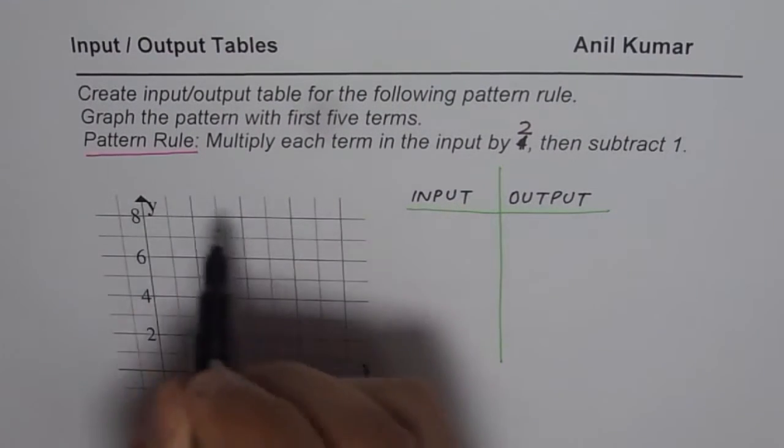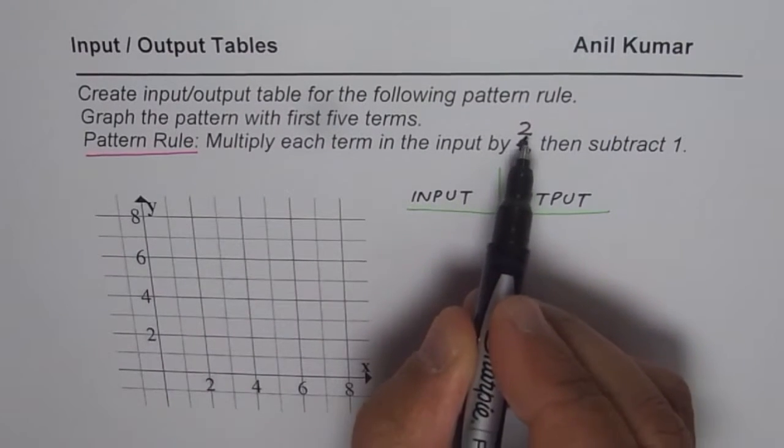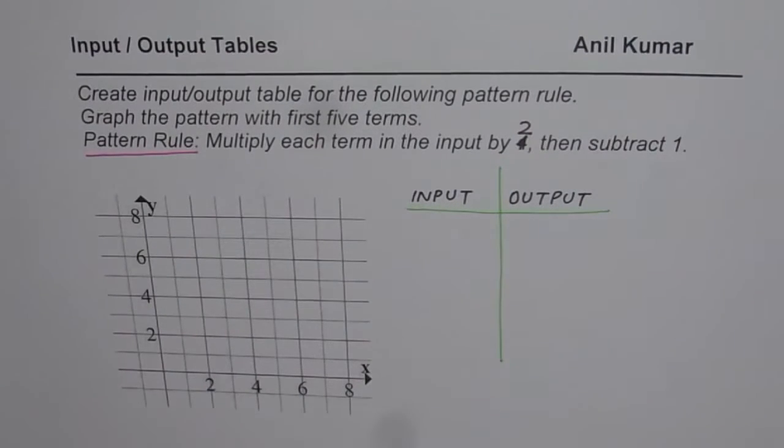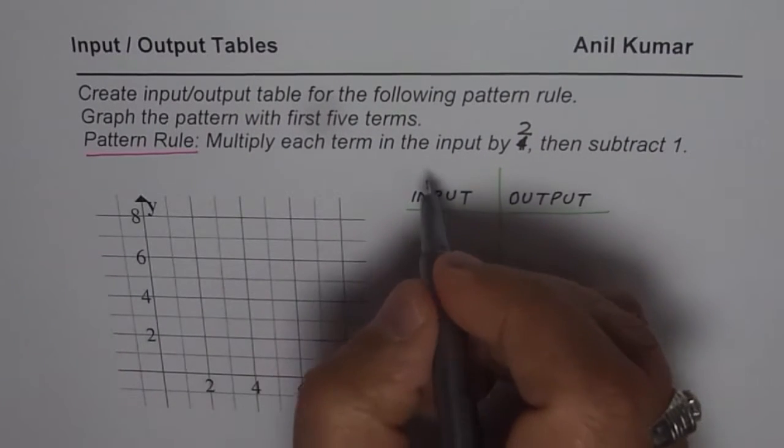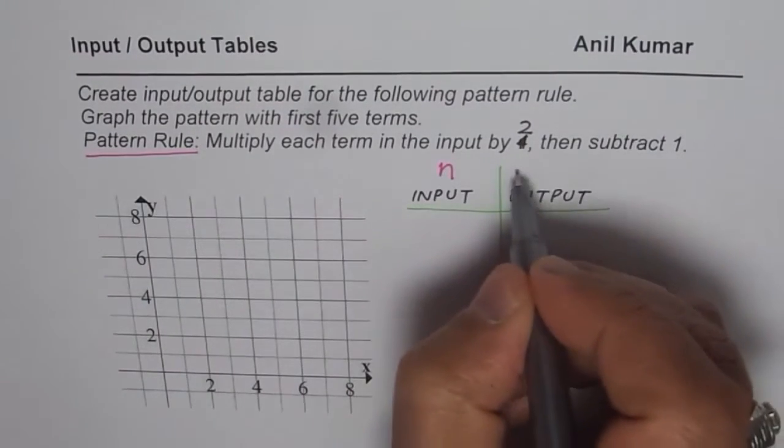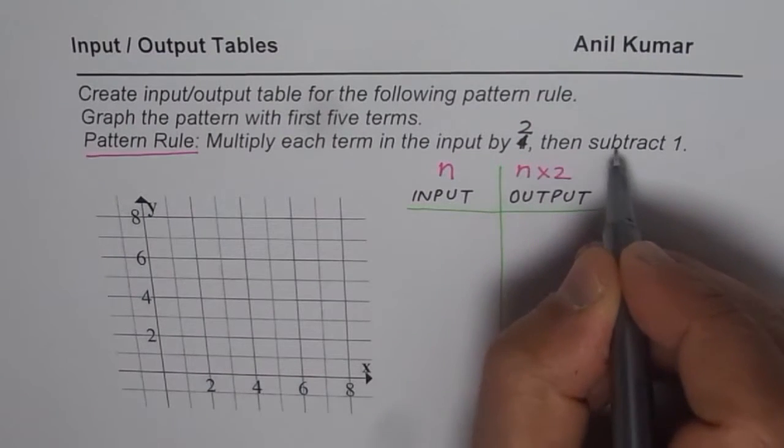The pattern rule is multiply each term in the input by 2 then subtract 1. So what we have to do here, as per the rule, we need to multiply each term by 2. So if input term is n, any number, then multiply n by 2 and then subtract 1. Then take away 1, that is the output.